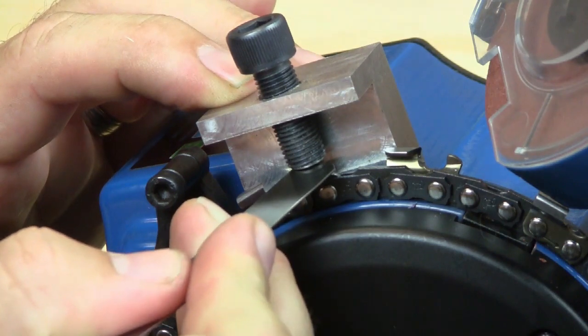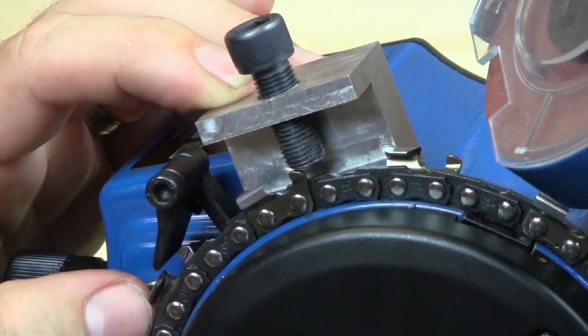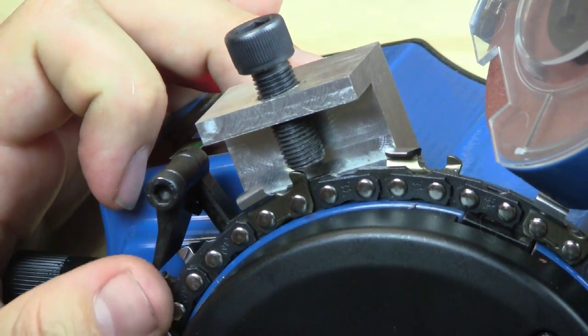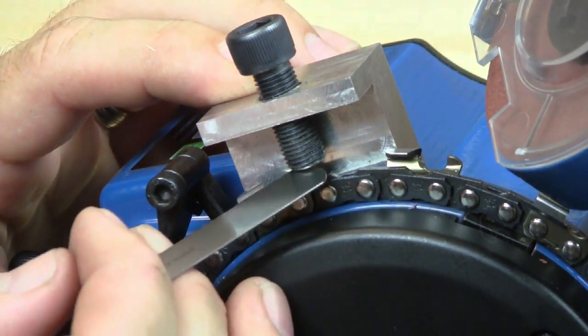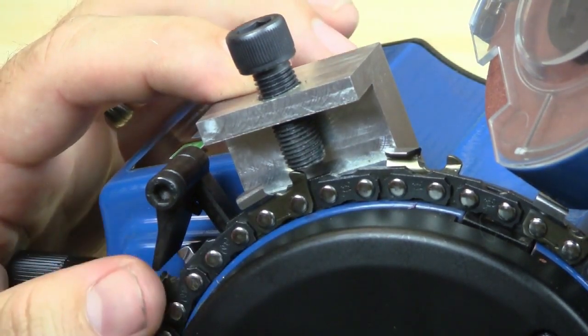If it fits in between the screw and the raker without moving the tool, then you're good to run the chain. The rakers are set to an appropriate height. If it will not fit, then we need to proceed to grinding down the rakers.